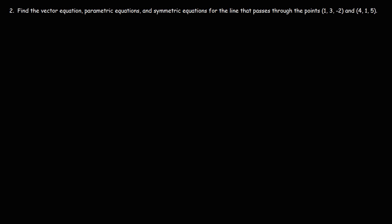Number two: find the vector, parametric, and symmetric equations for the line passing through points A=(1, 3, negative 2) and B=(4, 1, 5). To define a line we need a point and a direction vector. We can find the vector AB from the two points: 4 minus 1 is 3, 1 minus 3 is negative 2, and 5 minus negative 2 is 7. So vector v equals (3, negative 2, 7).